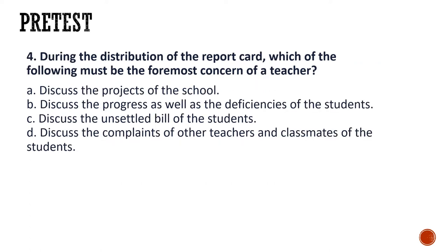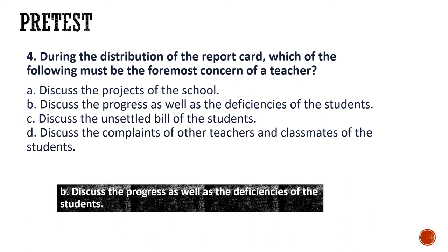Number four: during the distribution of the report card, which of the following must be the foremost concern of a teacher? A. Discuss the projects of the school. B. Discuss the progress as well as the deficiency of the students. C. Discuss the unsettled deal of the students. D. Discuss the complaints of other teachers and classmates of the students. The correct answer is letter B: discuss the progress as well as the deficiencies of the students.